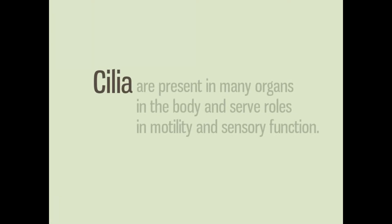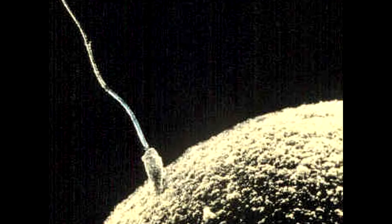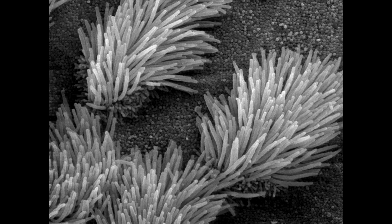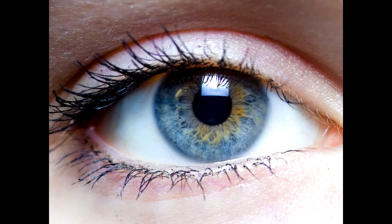Flagella are long bundles of microtubules that can either propel or pull cells in one direction. Cilia are present in many organs in the body and serve roles in motility and sensory function. In males, flagella propel sperm through the female body toward the egg. In the female reproductive tract, cilia line the fallopian tubes to move eggs and embryos into the uterus. They also line the respiratory tract, in both males and females, from the sinus to the lungs, to move mucus and trapped particles out of the body. In the eye, non-motile cilia cover photoreceptors and allow signals to move between cells. In the kidney, non-motile cilia detect movement of fluids.